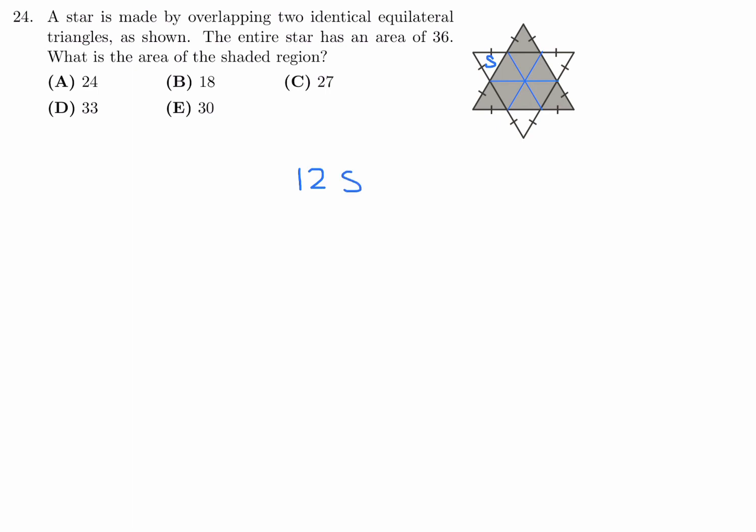So twelve S is the total. And they tell me that the entire star has an area of 36. So twelve S equals 36. So that means if you divide by twelve, S is equal to three. Alright? Now they want you to figure out just the area of the shaded region. Well, the shaded region is what? One, two, three, four, five, six, seven, eight, nine. Nine of those small triangles.